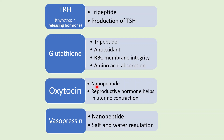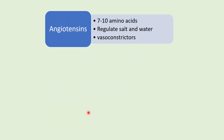Vasopressin is also a nonapeptide made up of nine amino acids, and it helps in salt and water regulation in the body. Angiotensins can have from seven to ten amino acids joined together by peptide bonds; they also regulate salt and water balance in the body and act as vasoconstrictors.